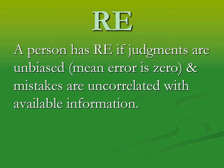What having a mean error of zero means is that sometimes we guess five degrees too warm and sometimes five degrees too cold, but if we take the average of our error, it is zero — the five degrees too high is offset by the five degrees too low. We're uncorrelated with available information, so our mistakes aren't predictable in any systematic way. In other words, all errors we have are simply random.